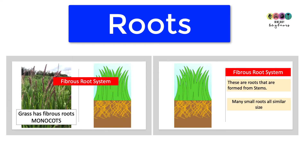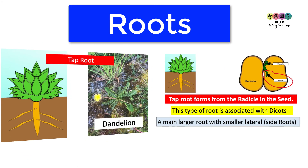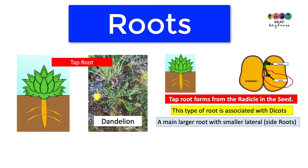There are two possible root systems a plant can have. The first is a fibrous root system, generally associated with monocots — grass is a great example. The roots are formed from the stems, resulting in many small roots of similar size that don't penetrate the soil deeply. The second is the tap root, which forms from the radicle in the seed and is associated with dicots — examples include the dandelion or carrot. It is generally a large main root with many smaller lateral roots.